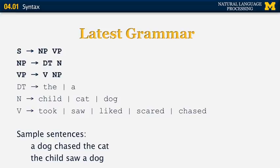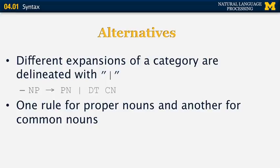This grammar only produces noun phrases that start with a determiner — it won't allow Samantha as a subject or object. Sample sentences it generates: a dog chased a cat, and the child saw a dog. When the same left-hand side can generate multiple right-hand sides, instead of writing the rule multiple times, we can write one rule with all possible expansions separated by a vertical bar, which indicates a choice. For example, we can have one rule for proper nouns and one for common nouns, handling both Samantha as a proper noun or the cats as DT followed by a common noun.